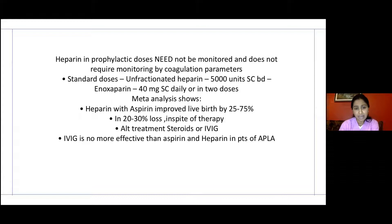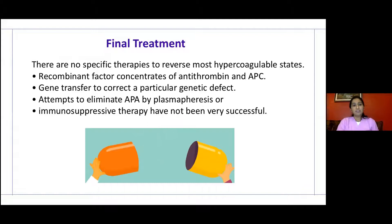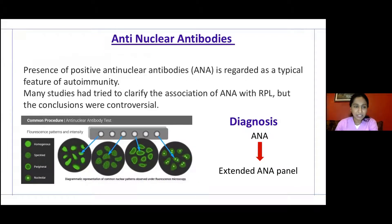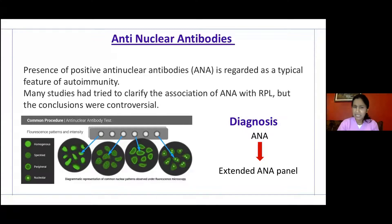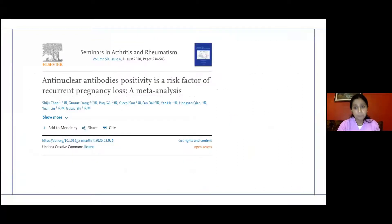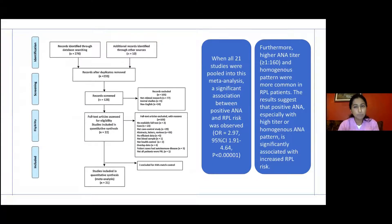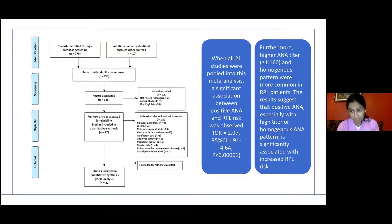Alternative treatments are steroids and IV immunoglobulins. Regarding anti-nuclear antibodies: a positive ANA is regarded as a typical feature of autoimmunity, and while not a definitive cause of recurrent pregnancy loss, it could be a contributing factor. A meta-analysis including 21 studies showed a significant association of positive ANA with recurrent pregnancy loss, and higher titers and a homozygous pattern were more common in recurrent pregnancy loss patients.